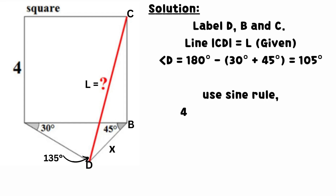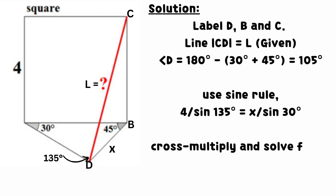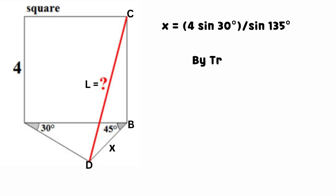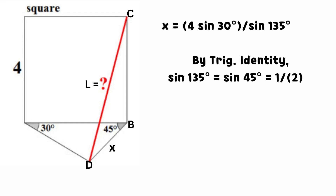Angle D equals 105 degrees after substitution of values and simplification. Use the sine rule: 4 divided by sine 135 degrees equals X divided by sine 30 degrees. Cross multiply and solve for X.